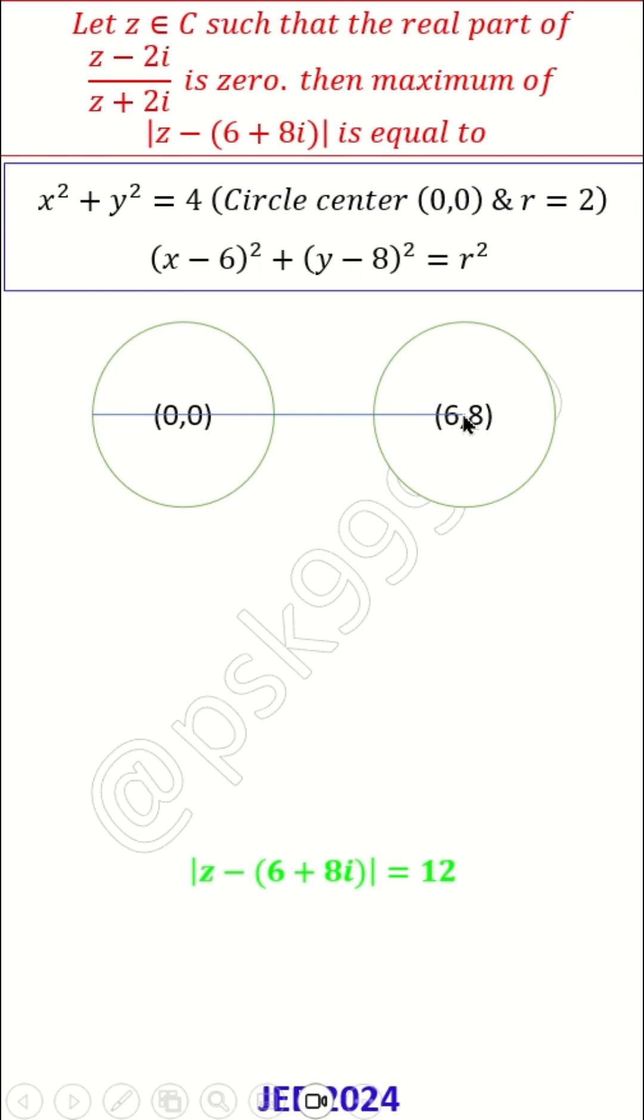When will I get the maximum of this second circle's radius? When I choose something on the first circle, correct, which is on the far side. That is here - the point is here. If I choose this one, I get r as maximum, correct.